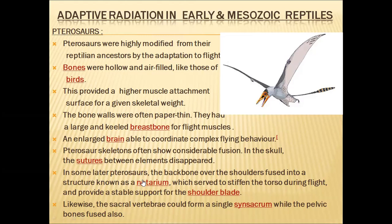In some later pterosaurs, the backbone over the shoulders fused into a structure called the notarium, which stiffened the torso during flight and provided stable support for the shoulder blade. Likewise, sacrum vertebrae were also fused to form a synsacrum, just like birds — this synsacrum gives support to the hind limbs.